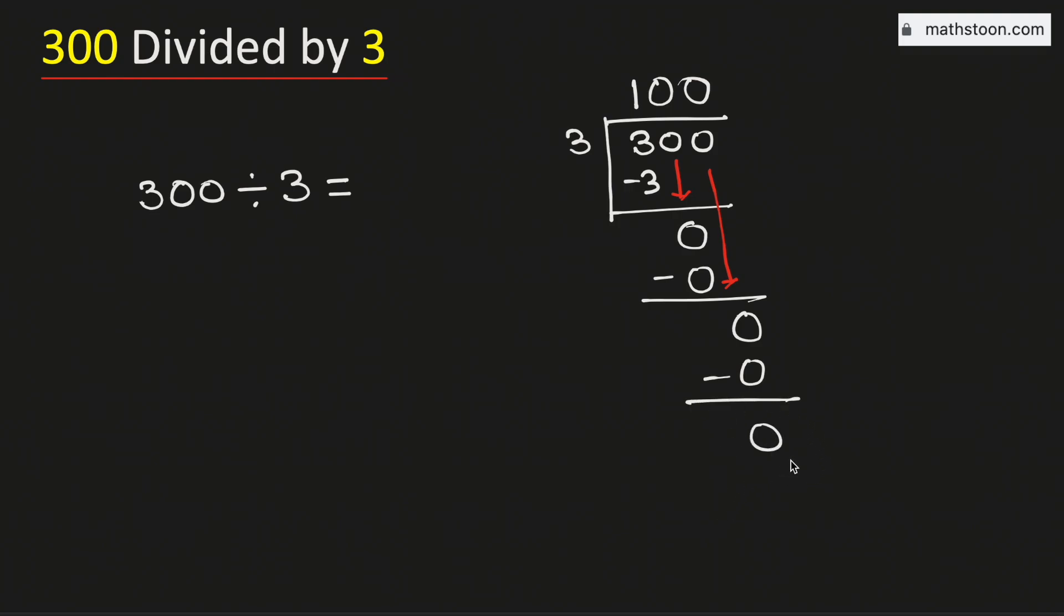As we have obtained the number 0 and there is no number to bring down here, so we will stop. Therefore, 300 divided by 3 is equal to 100. And this is our final answer.